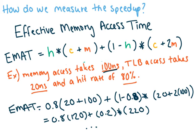From this, I could ask questions like: what happens if our hit rate drops — how will that affect our EMAT? What is more important, hit rate or memory access time? This can inform us which part of the hardware or software we want to improve. Maybe it's better to focus on speeding up memory access, or maybe on dropping the size of the translation look-aside buffer so that it's faster. We can make those design decisions.